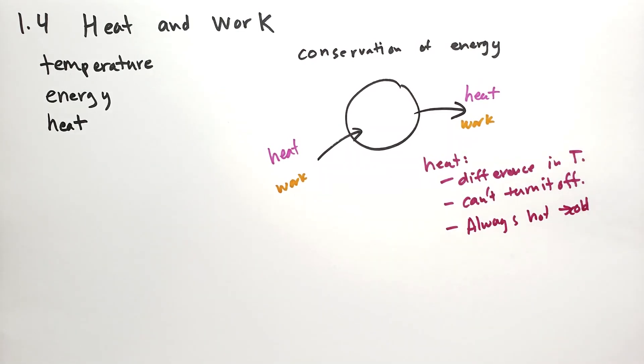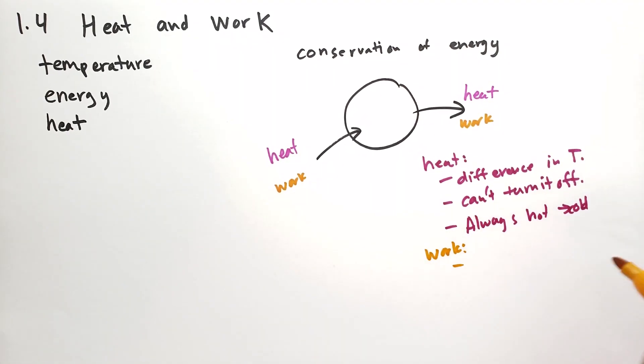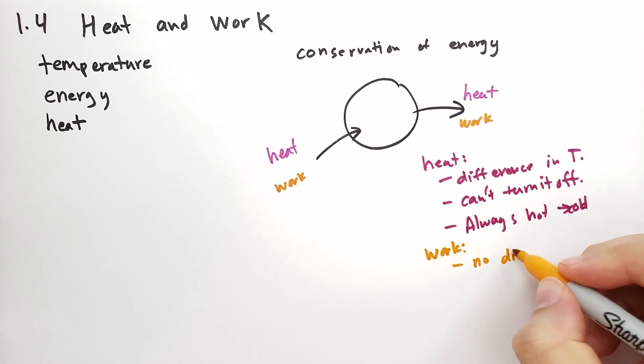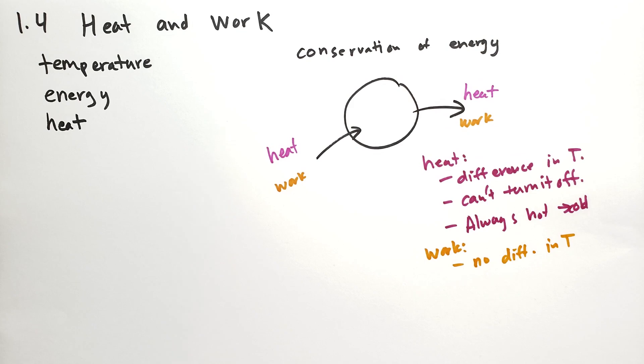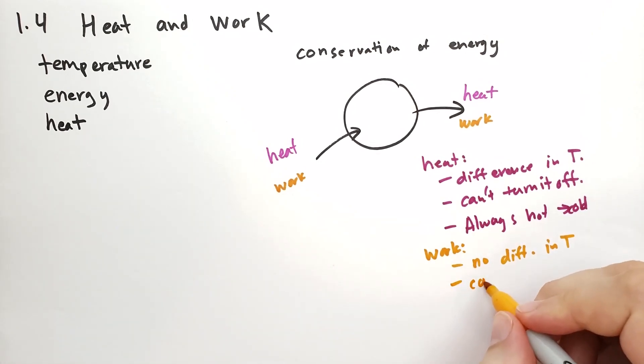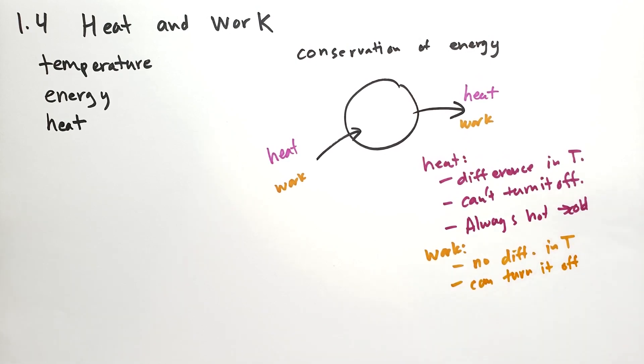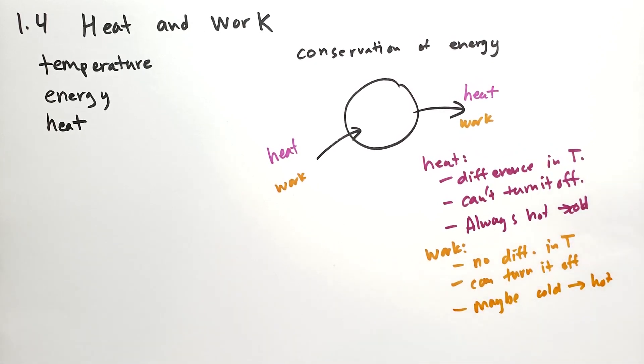Work, on the other hand, doesn't need a difference in T. So there's no difference in T. So you can take your soup, your hot soup, put it in a cold microwave, and when you turn that microwave on, the soup will get hotter. The microwave might get hotter too, but the microwave isn't necessarily hotter than the soup. And you can turn it off. So you can take the weight off the pressure. You can relax the constraints on the volume. You can turn the microwave on and off. You can connect or disconnect the battery. So you have some control over this. And this may be cold to hot. So when you see energy flowing from a cold thing to a hot thing, by definition, that's not heat. That's work.